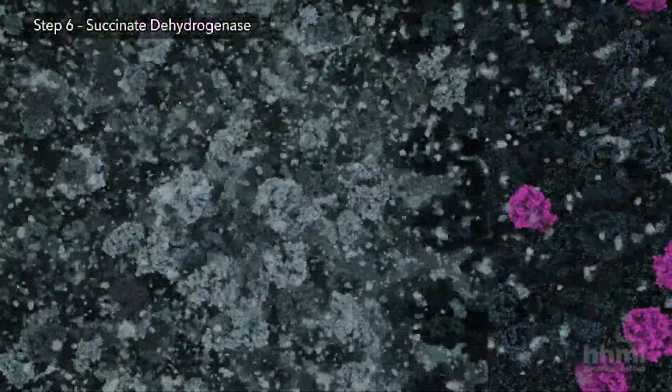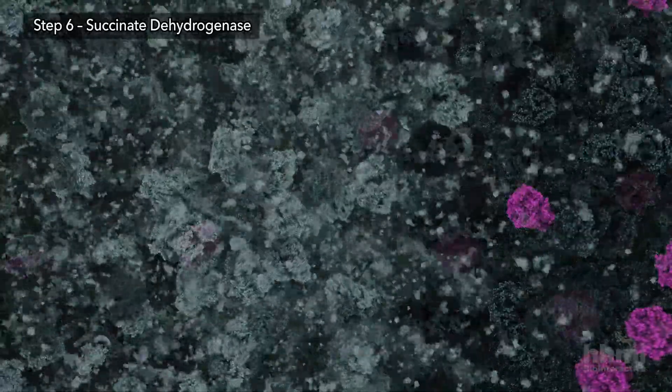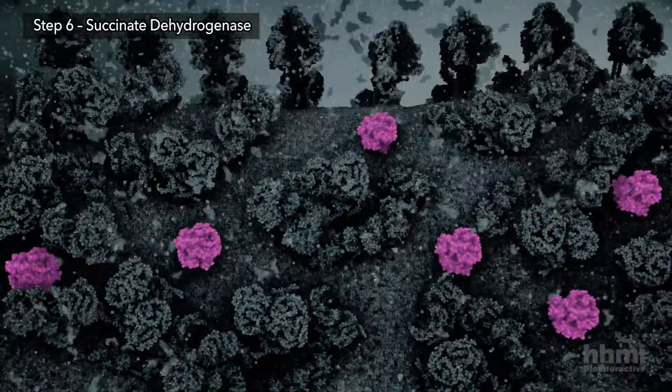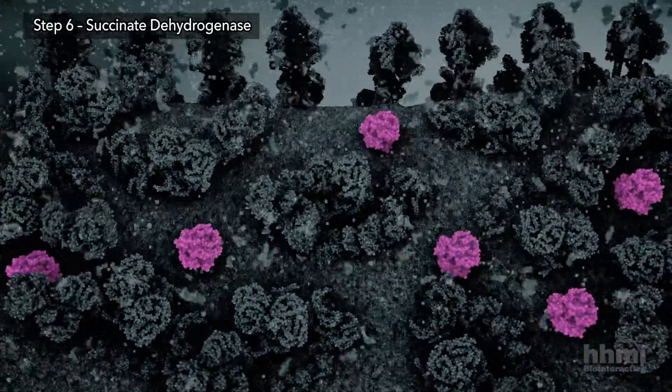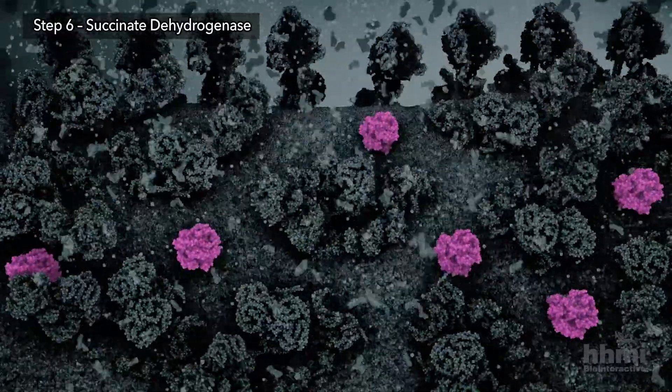Step six is performed by an enzyme embedded in the inner mitochondrial membrane. This enzyme is also known as complex 2 of the electron transport chain.